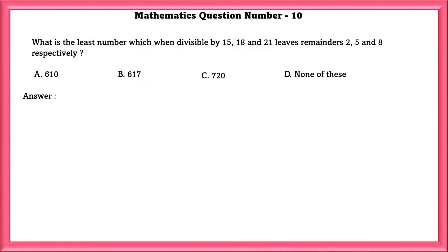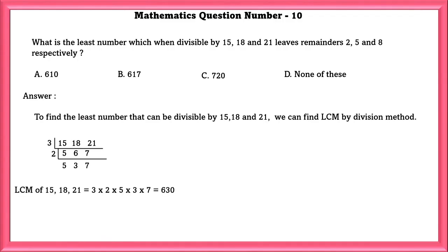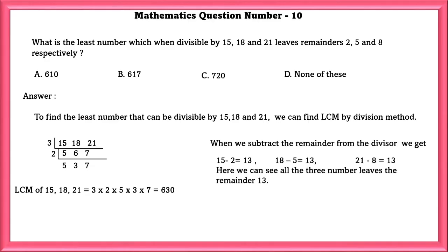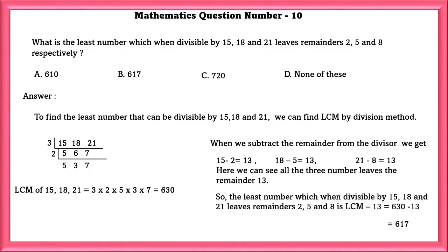Mathematics Question Number 10: What is the least number which when divided by 15, 18 and 21 leaves remainder as 2, 5 and 8 respectively? To find the least number that can be divisible by 15, 18 and 21, let us find the LCM. If we find LCM using the division method, we will get 630 as the LCM. When we subtract the remainder from the divisor, we get 15 minus 2 that is 13, 18 minus 5 that is 13, 21 minus 8 that is 13. Here, we can see all the three numbers leave the remainder of 13. So, the least number which when divisible by 15, 18 and 21, leaves remainder 2, 5 and 8 is LCM minus 13 which is equal to 617.